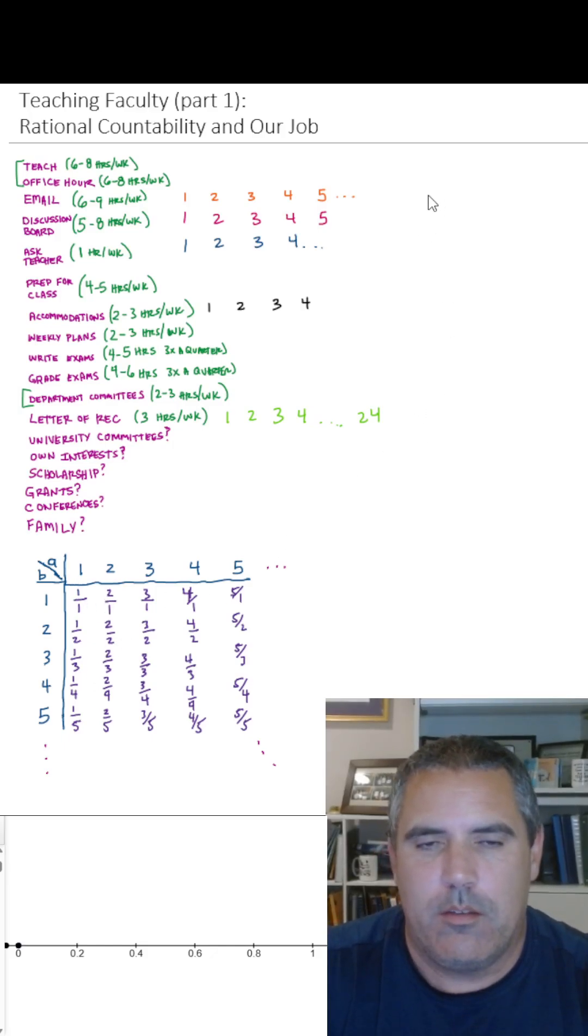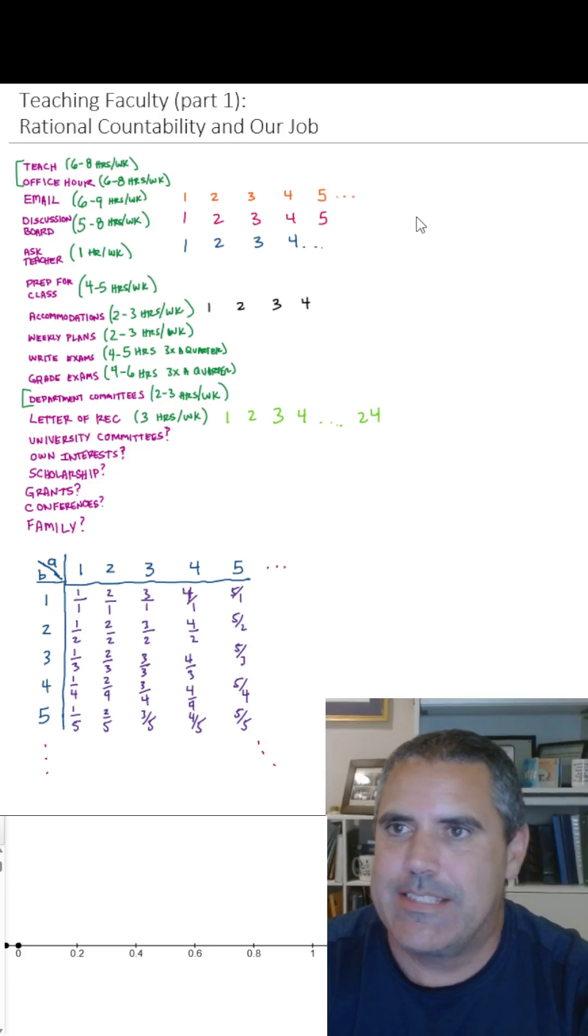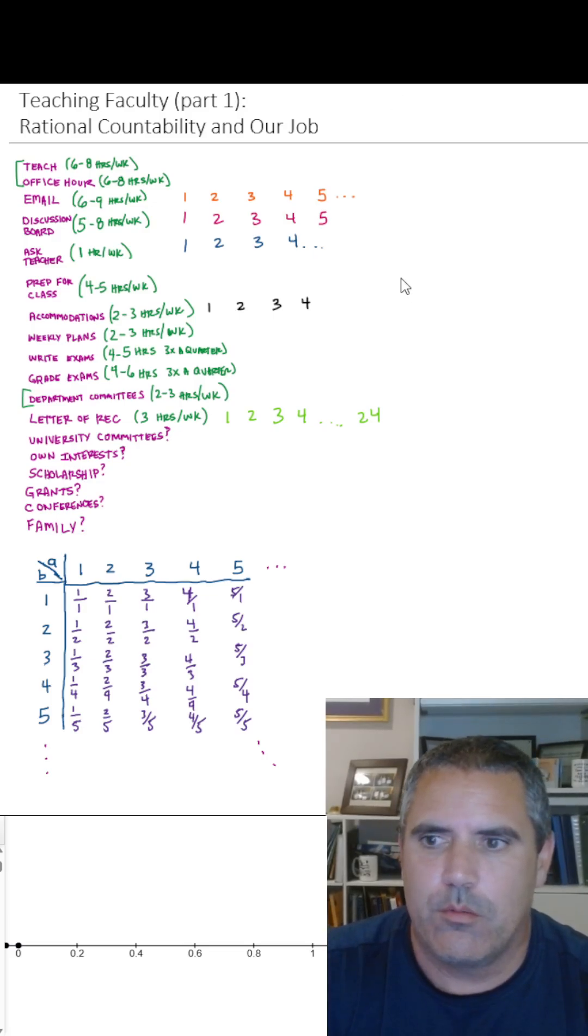So if you don't know, we say a list, a set is enumerable or countable if you can line it up with the list 1, 2, 3, 4.